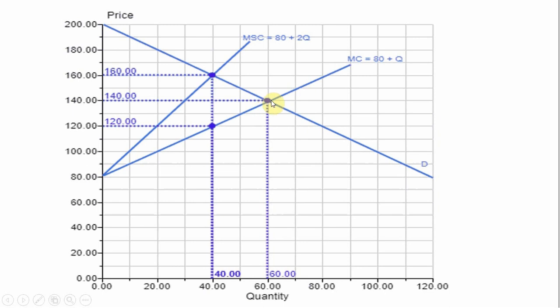The efficient outcome will occur when all relevant costs are being accounted for, not only private but external. So the marginal social cost curve, which we got by adding marginal cost to the marginal external cost, intersects demand at a quantity of 40 and a price of 160. That would be the efficient outcome.